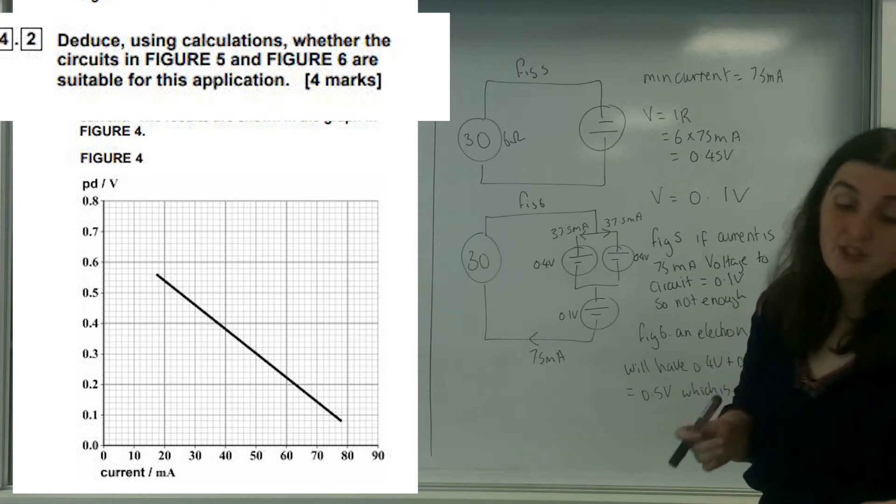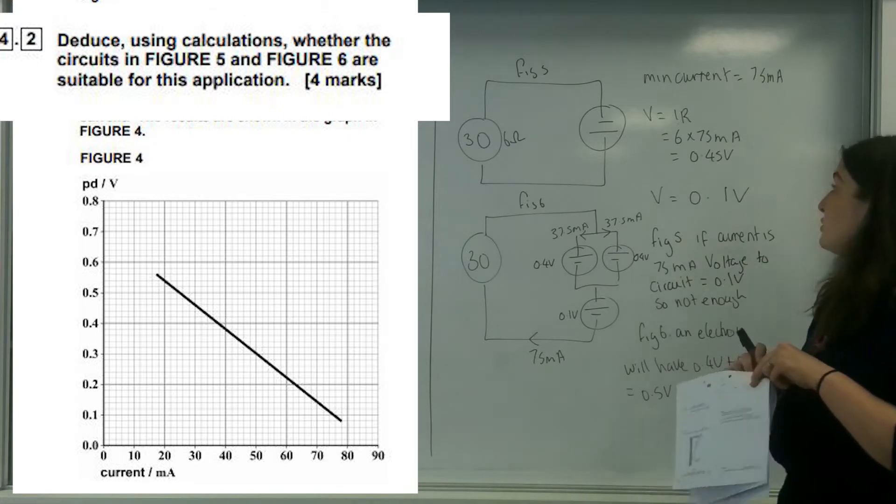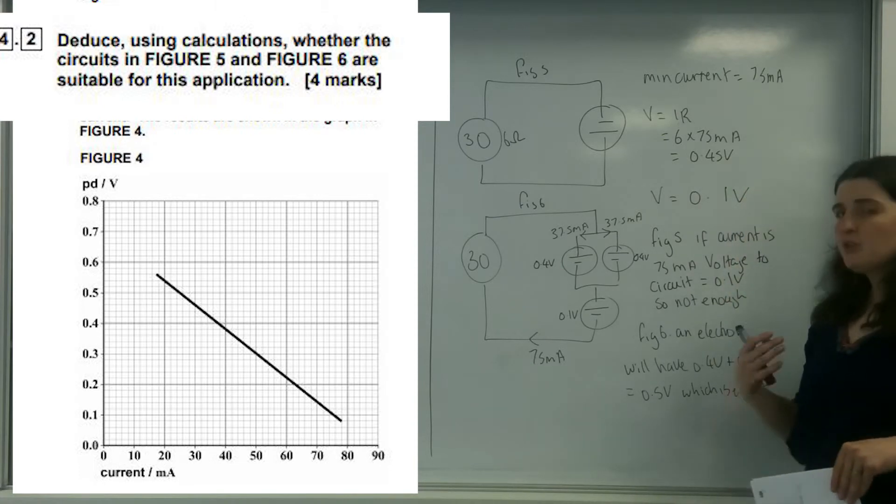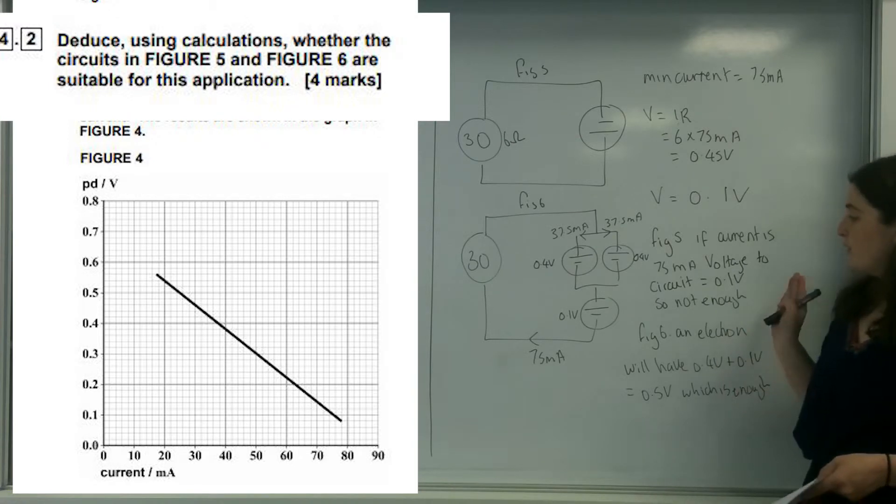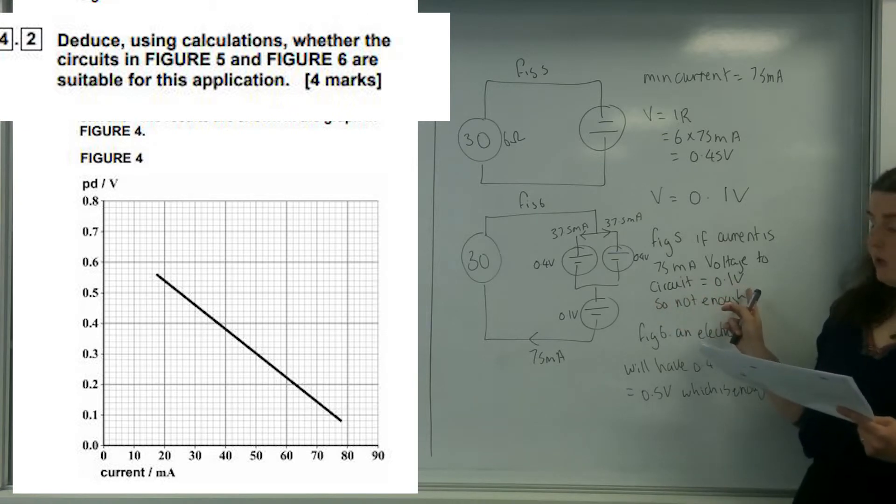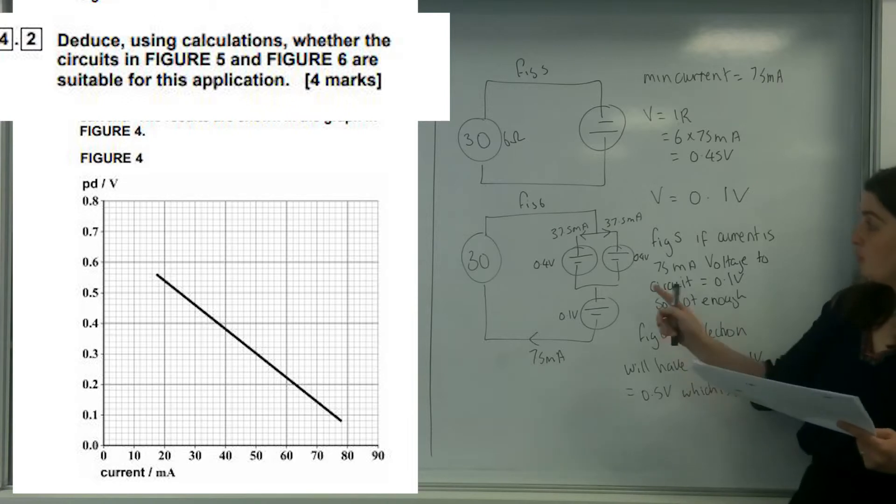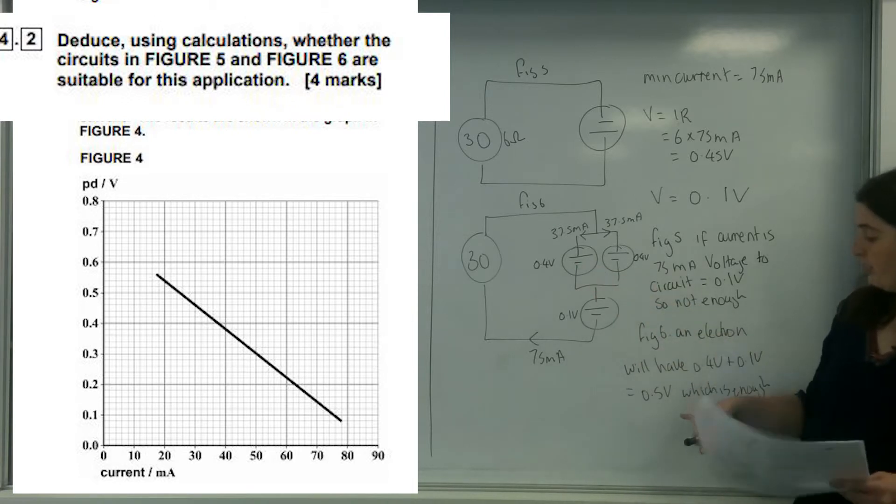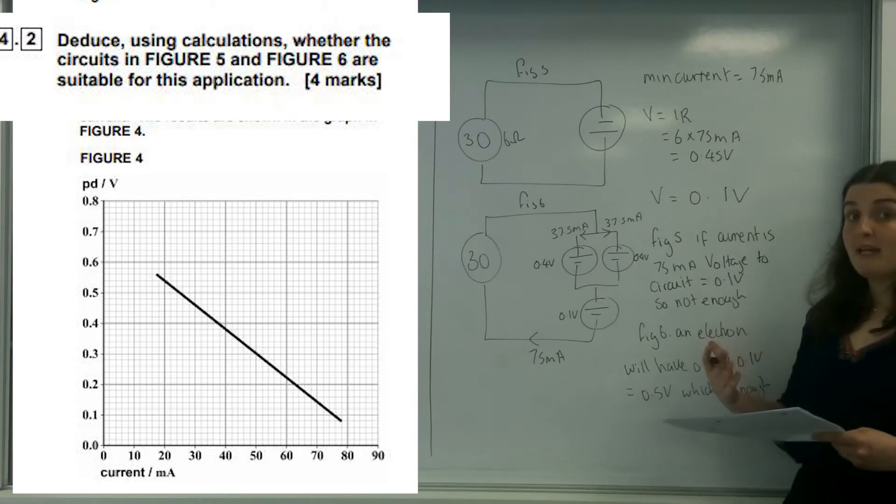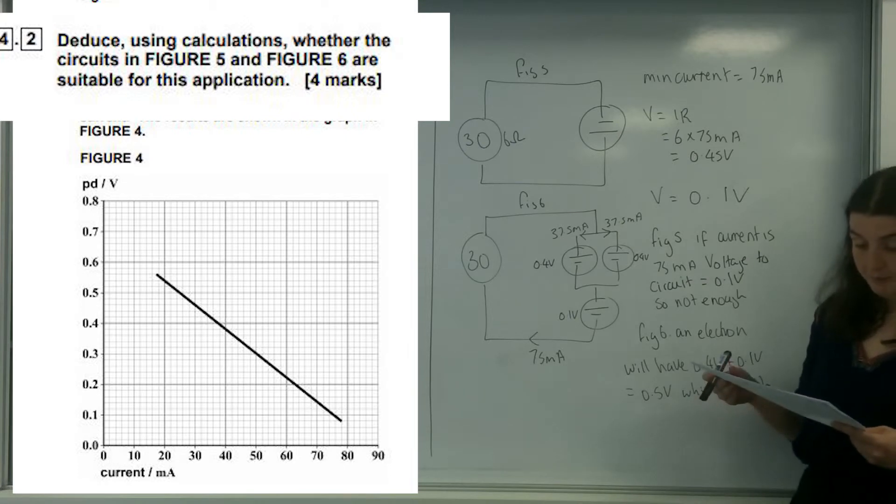That is quite a wordy question. It's four marks here. There's one mark for working out 0.45 volts, and most of the marks are for justifying your answer. Using my graph, I'm only going to get 0.1 volts out, which is not enough. But figure 6, an electron will have 0.4 plus 0.1, which is enough. There is this idea of deduce, which means you've got to make a statement, and figure 6 is the best one.